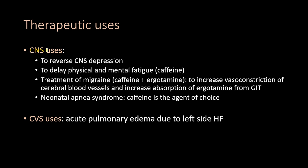Other methylxanthines like caffeine are used for CNS purposes, such as to reverse CNS depression and to delay physical and mental fatigue. Caffeine is combined with ergotamine for treatment of migraine to increase vasoconstriction — because methylxanthines cause cerebral vasoconstriction — and to increase absorption of ergotamine from the GIT. Caffeine is also the agent of choice in treatment of neonatal apnea syndrome.